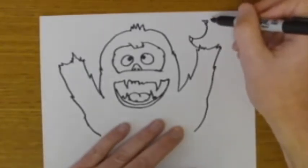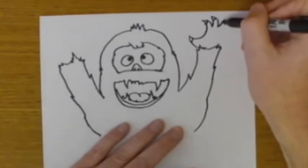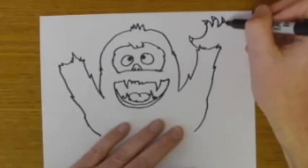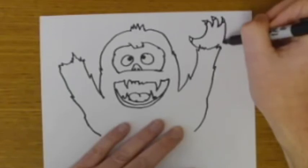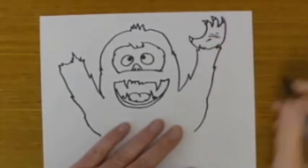And the claws right at the top are just a triangle shape, right on top of the finger. Okay, there's the hand, and just a few lines there on the palm of the hand.